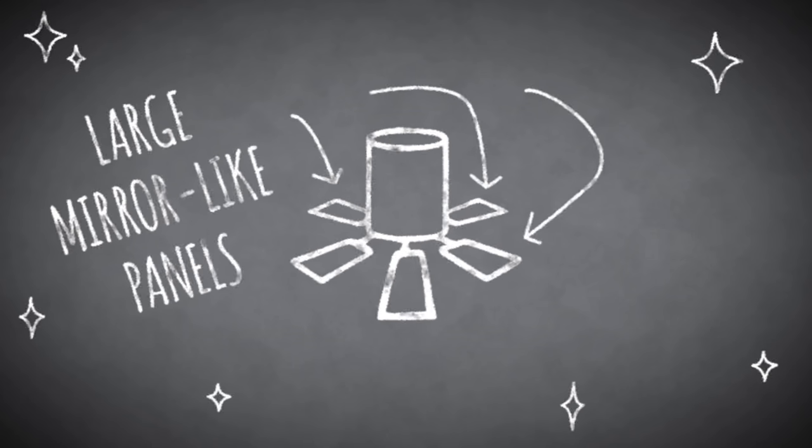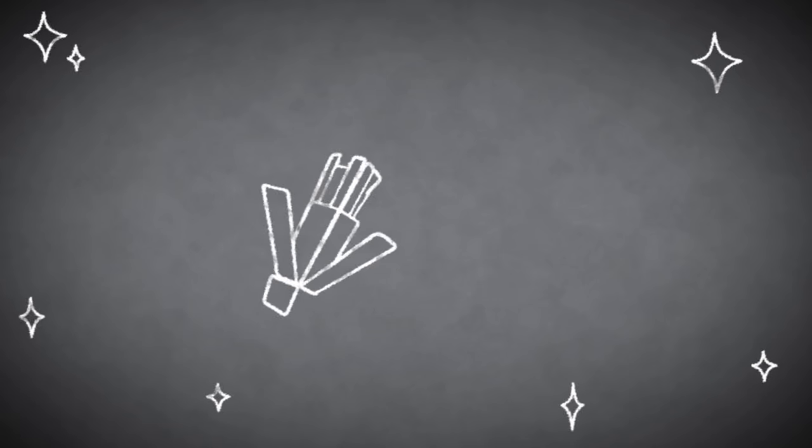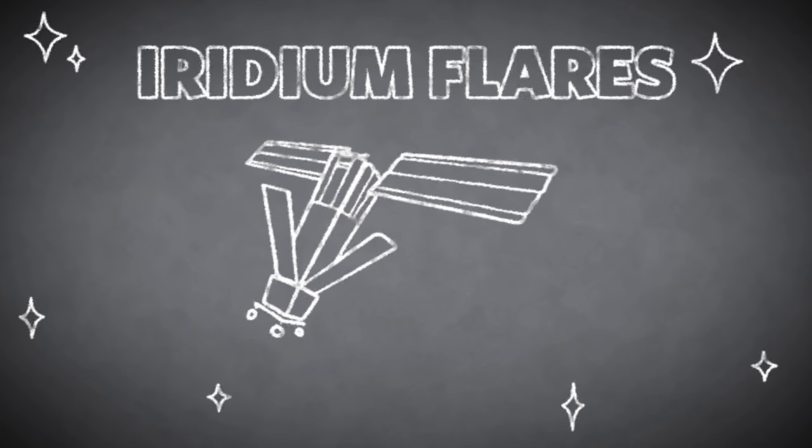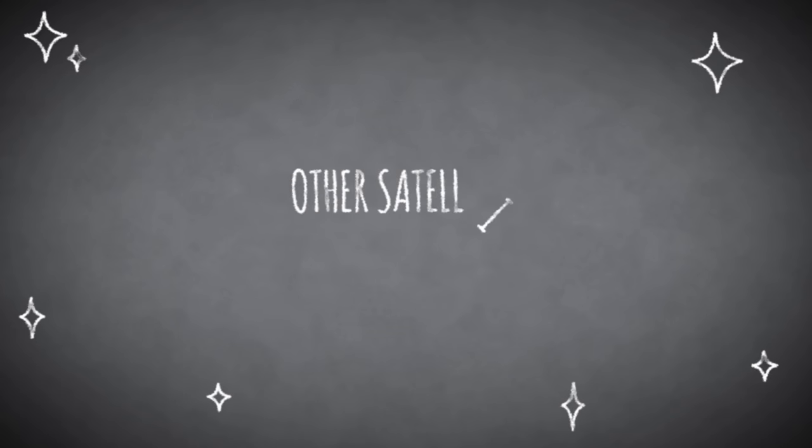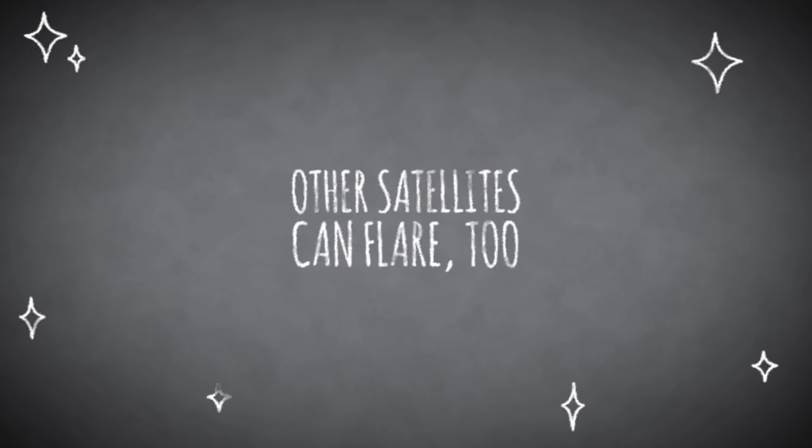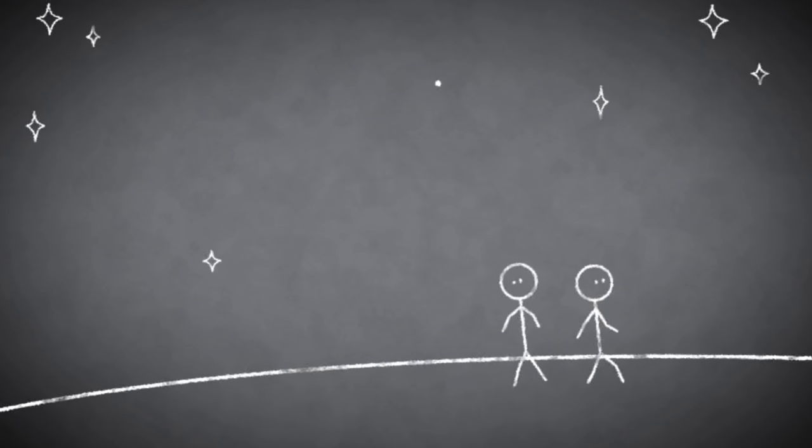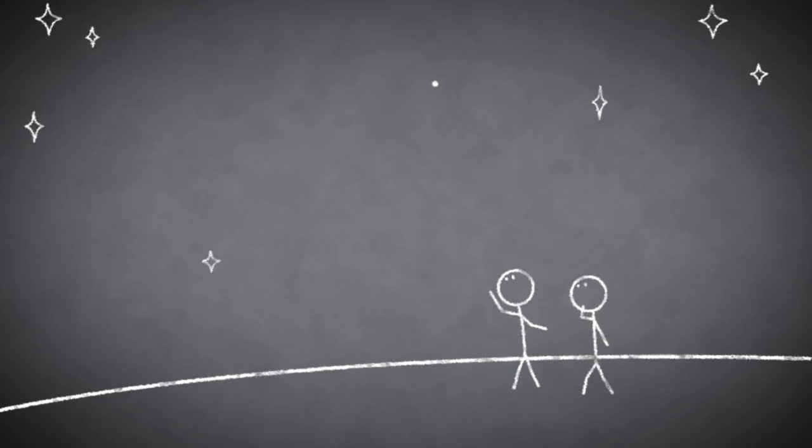Sometimes a satellite may flare or brighten suddenly. This is usually because it has large mirror-like panels that reflect sunlight to the ground. The best known of these are called iridium flares after the iridium satellites that produce them, but many other large satellites can flare as well.